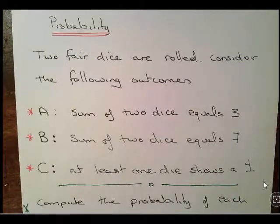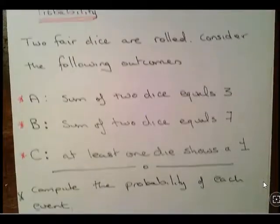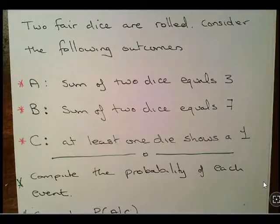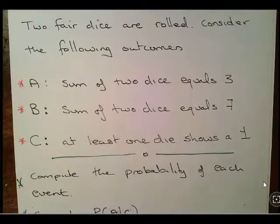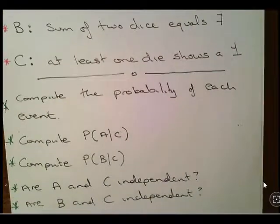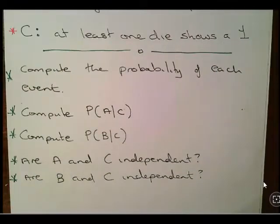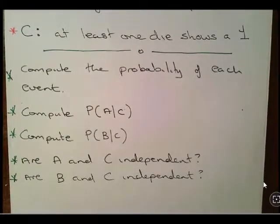Two fair dice are rolled. Consider the following outcomes: A is the sum of two dice equals 3, B is the sum of the two dice equals 7, and C is at least one die shows a three. We are asked to compute the probability of each event, the probability of A given C, the probability of A given B, and also whether A and C are independent and whether B and C are independent.